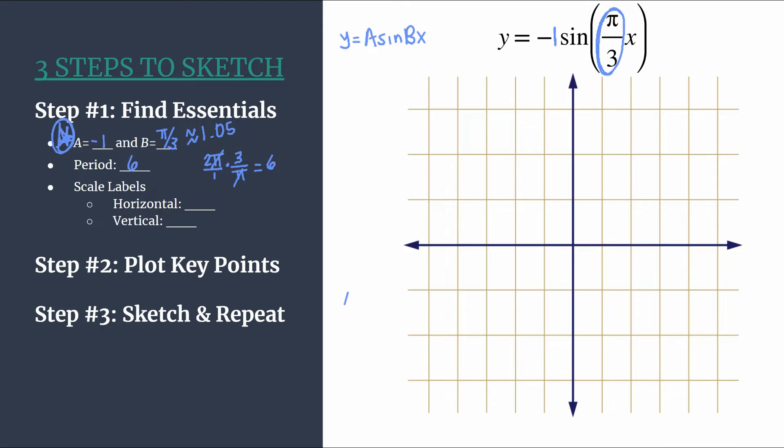So our period is six. And remember, period is just the length of one horizontal cycle. And that's what I was mentioning earlier. Pi over three seems like a really weird and intimidating b, but actually it cancels out the pis when you're looking at the period. And you get to have a really nice number to work with.